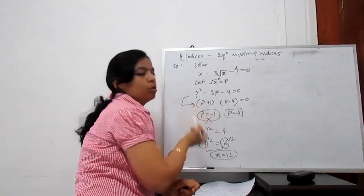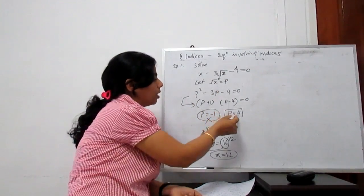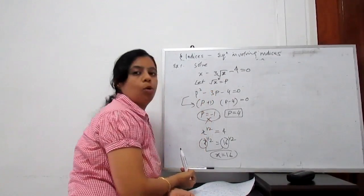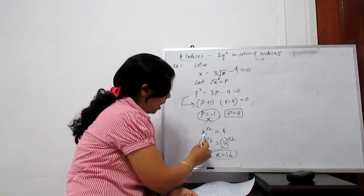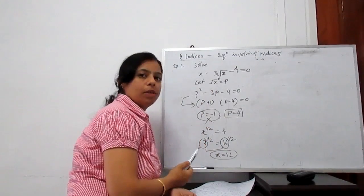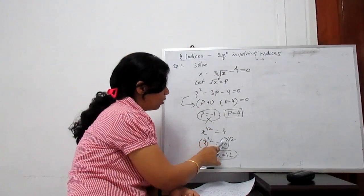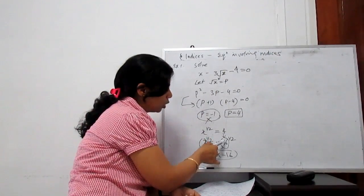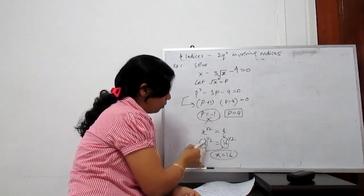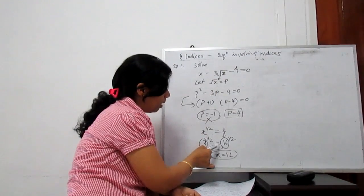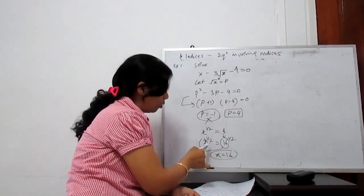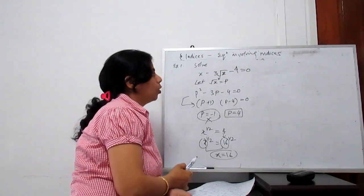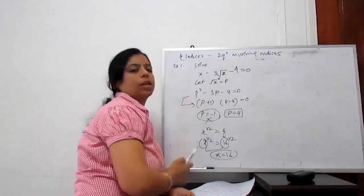The roots of this quadratic equation are p equals minus 1 and 4. We reject the negative root and proceed with the positive root p equals 4. Since p is x to the power 1 by 2, we have x to the power 1 by 2 equals 4. Rewriting: square root of 16 is 4, so x to the power 1 by 2 equals 16 to the power 1 by 2. Comparing bases gives x equals 16, which is the solution.